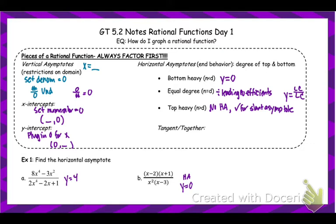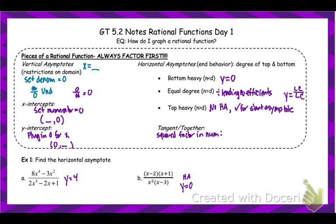The last part of that box — the tangent and together piece — helps us draw the curves of our graph. When sketching, your graph needs to be in the right area and approach the asymptotes correctly. Tangency, like with polynomial graphs, occurs when a graph touches a point and bounces off. If you have an even multiplicity — a squared factor in the numerator — your graph will be tangent at that x-intercept, touching and going back in the same direction.